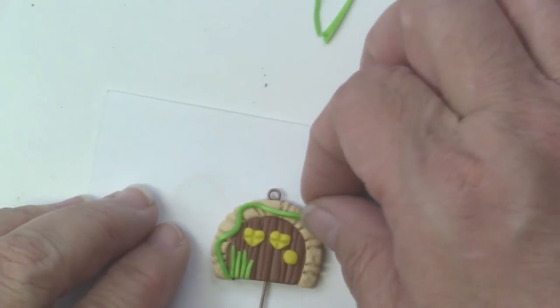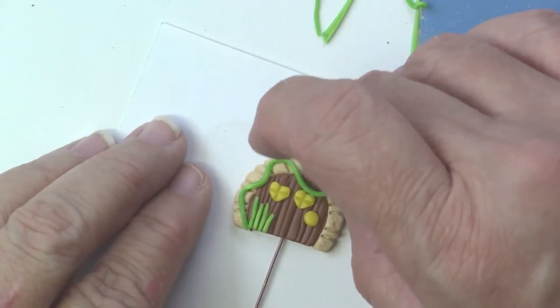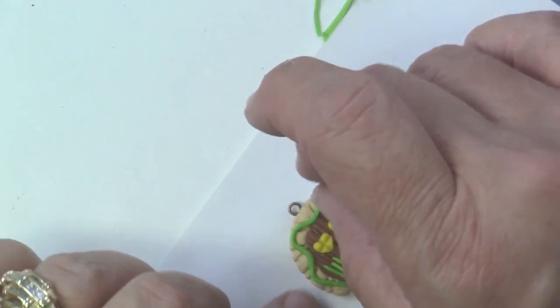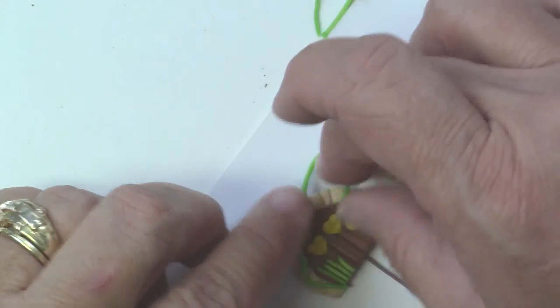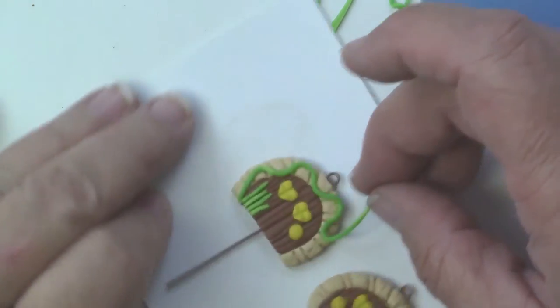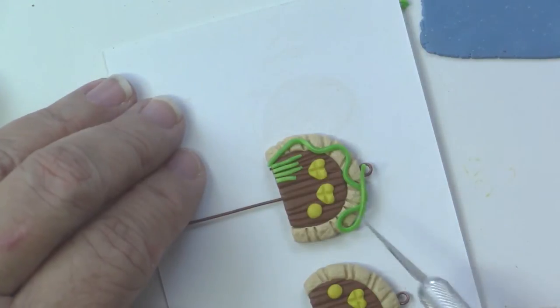You can just sort of lightly place it until you get the shape that you'd like on that vine. I'm going to keep moving that around the door frame.